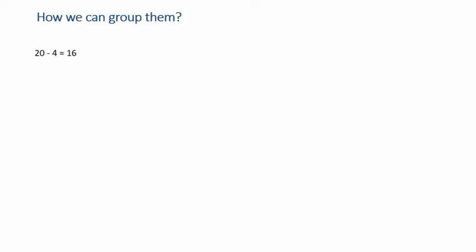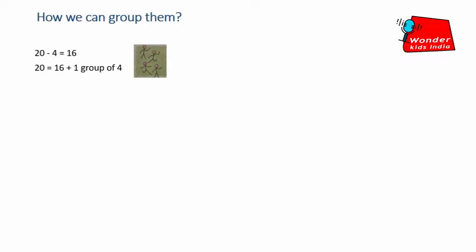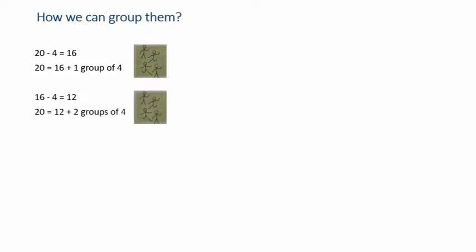First of all, he will select only 4 children to make the first group. By this he is left with 16 children and 1 group of 4. Again he will select only 4 children to make the second group. In this way he is left with 12 children and 2 groups of 4. Again he will do the same thing.